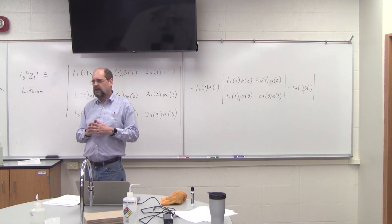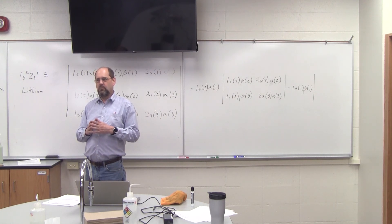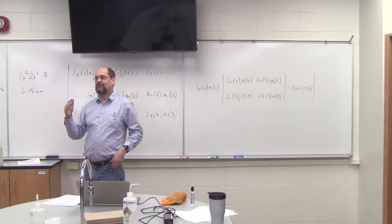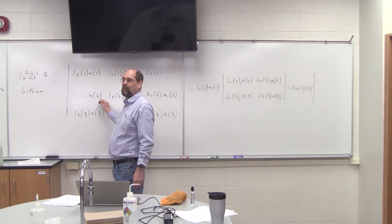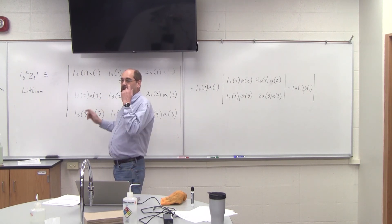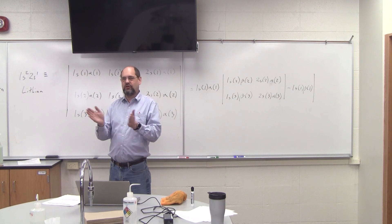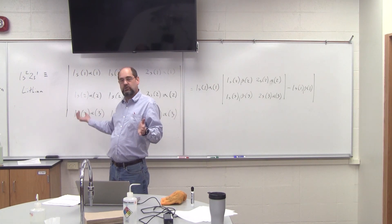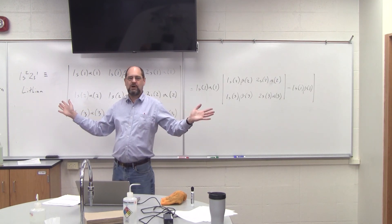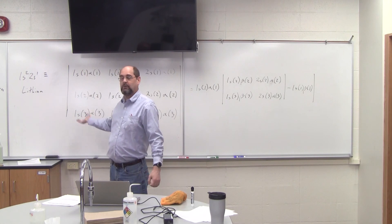A couple of you looked like you'd seen that before. Do you know what the determinant of a matrix is when any row or column is identical? Zero. What that means is, if these two rows are equal, it means that two electrons have the same four quantum numbers. So this is the automatic Pauli principle — if you put together a wave function that has two fermions with the same quantum numbers, the wave function goes to zero because the determinant, when you solve it, is zero.